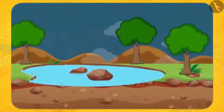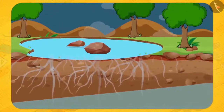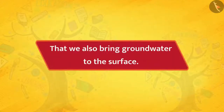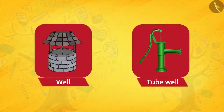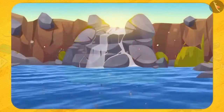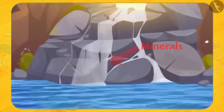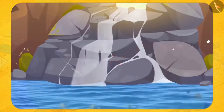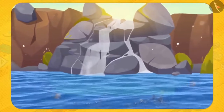Some of the water falling on the earth seeps into the ground and is available as groundwater. Some part of this water also reaches the surface through springs. We also bring groundwater to the surface via wells or tube wells. Some part of the rainwater also flows from the top of rocks, dissolving the soluble minerals present in the rock, and finally mixes in the sea. In this manner, rainwater carries many minerals from the land to the sea, which are used by sea creatures.